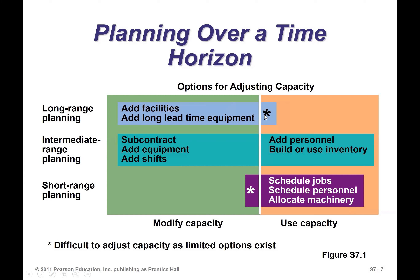Note the asterisk here — it tells you it's difficult to adjust capacity as limited options exist. You need to add a facility to make sure you can meet your expected demand in the long term. So that's your planning over a time horizon.